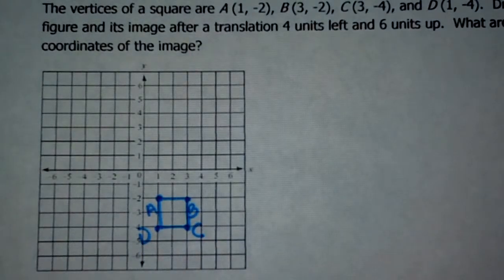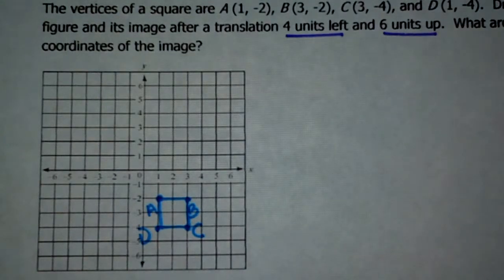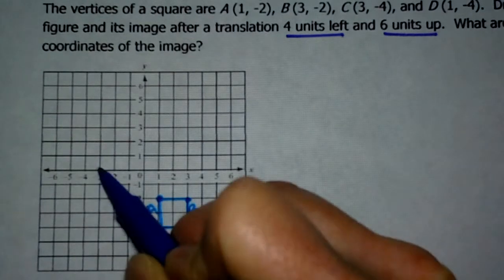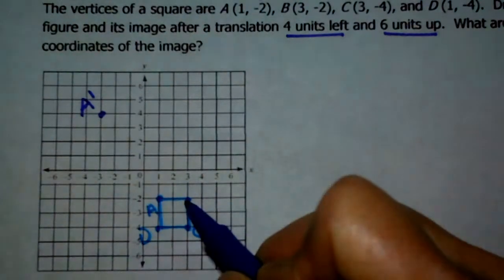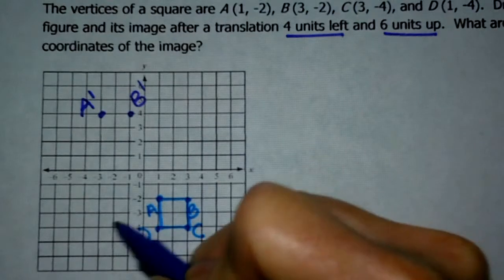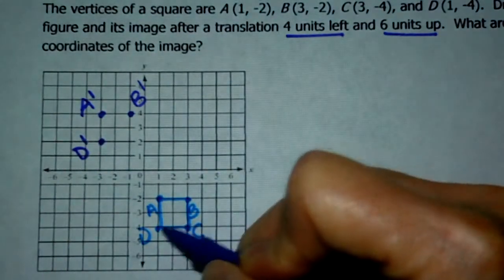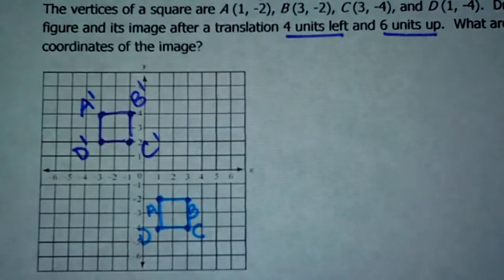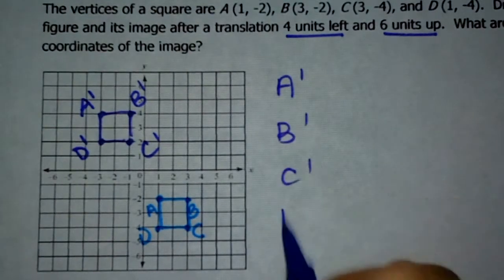Now the example asks you to do a translation of four units left and six units up. We're going to take each point one at a time and go four to the left, six up. So here's A — one, two, three, four to the left, one, two, three, four, five, six up. That's A prime. For B: four to the left, six up — there's B prime. For D: four left and six up — D prime. And C: four left and six up — C prime. So here's our new square. What are the coordinates of A prime, B prime, C prime, D prime?